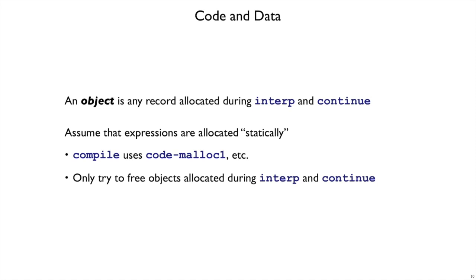To do that static allocation of code, compile is going to use a separate kind of malloc, code malloc, that will allocate into its own code space. And we will only look at objects like closures and numvs and continuation records that are actually allocated during interp and continue.